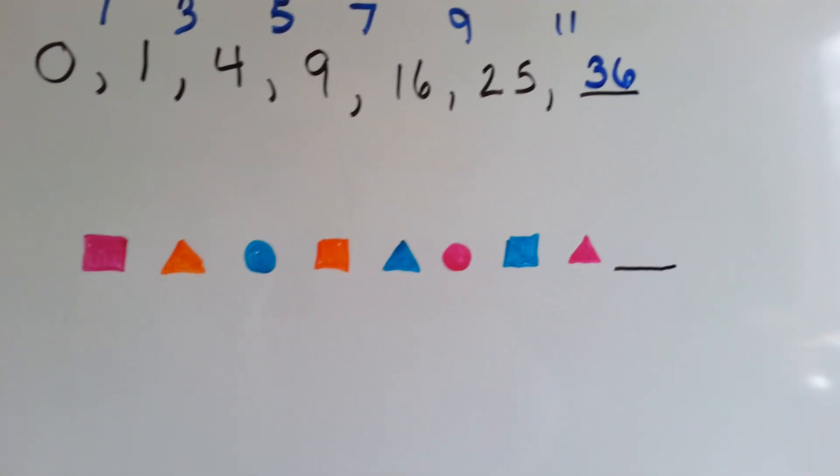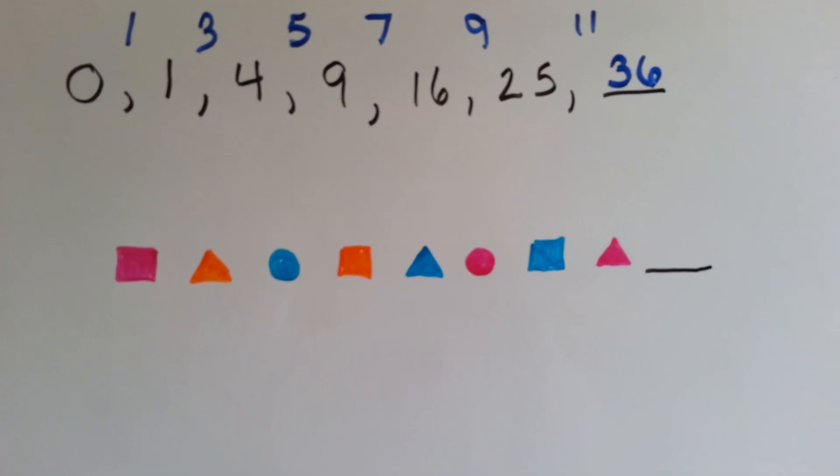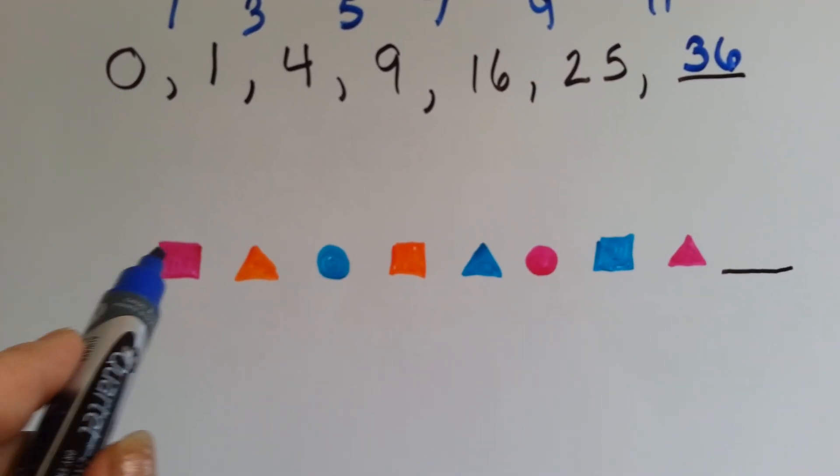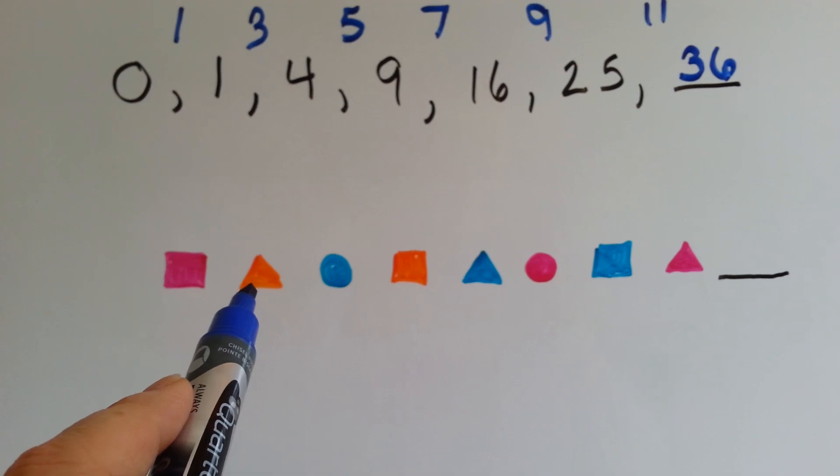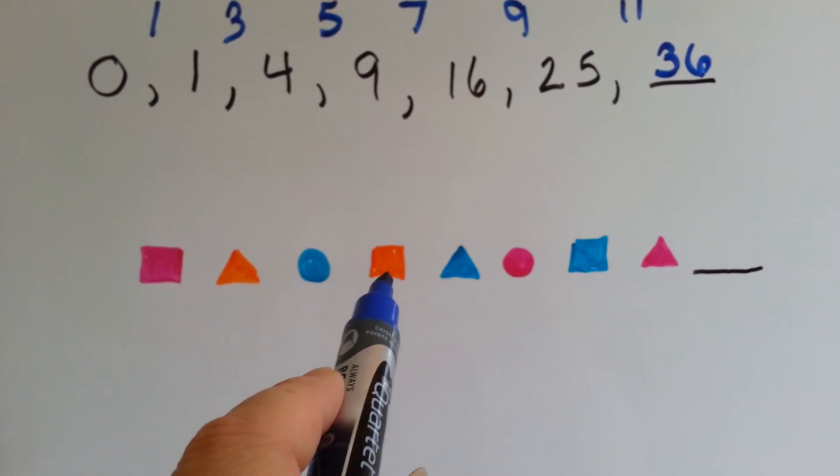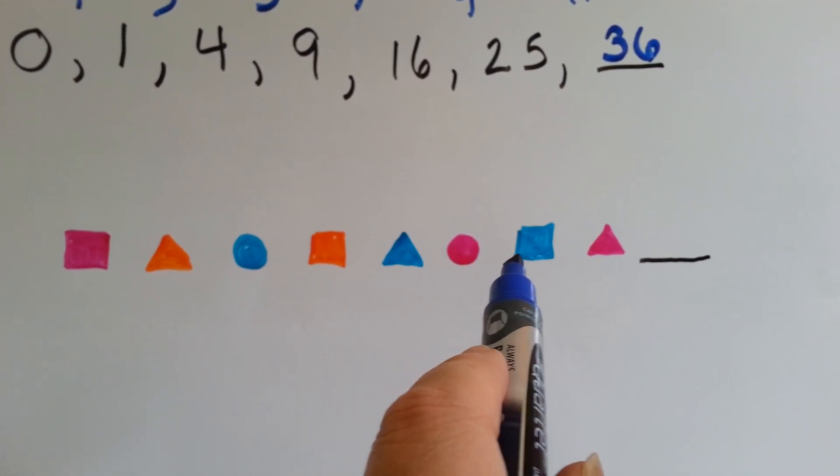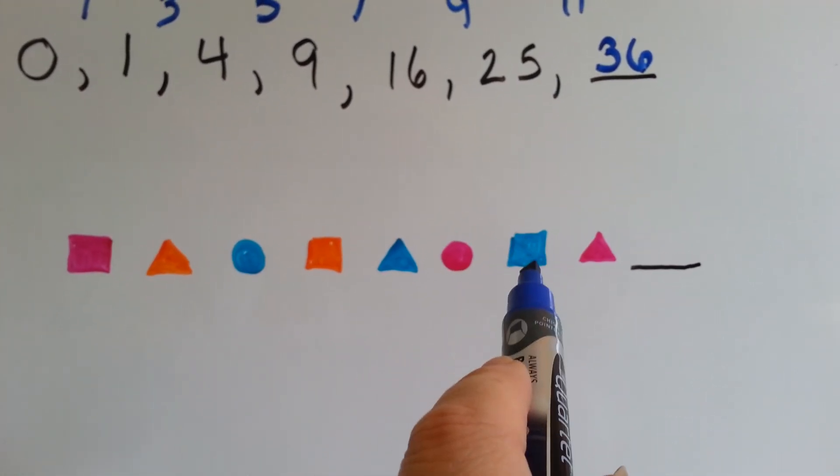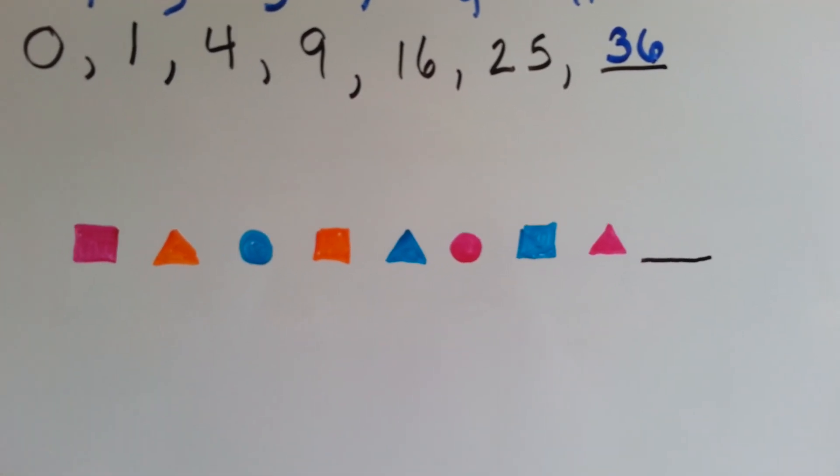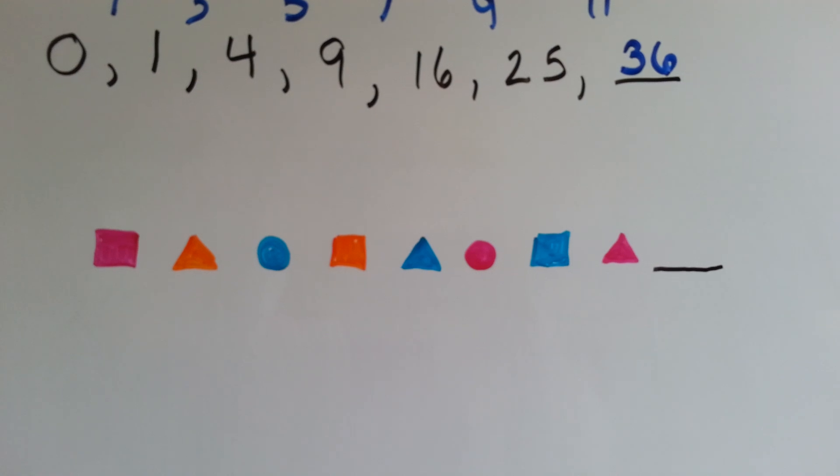Okay, here's a colored, shaped pattern. See if you can figure this one out. This one's a little harder. We've got a pink square, an orange triangle, and a teal ball. Then we've got an orange square, a teal triangle, and a pink ball. Then we've got a teal square, a pink triangle. So, what comes next? If you want to figure it out on your own, you should pause the video now.